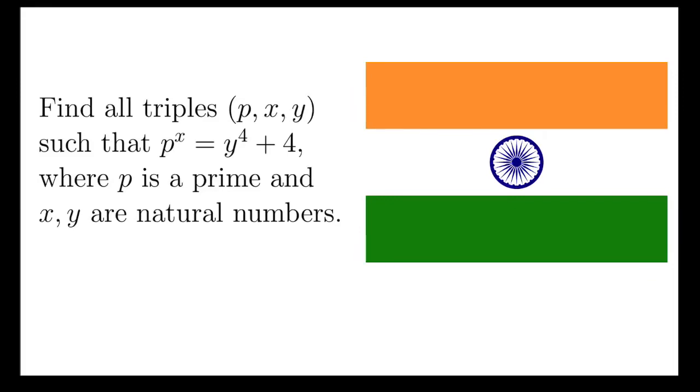Let's take a look at this problem, taken from the 2008 India National Mathematical Olympiad. It says, find all triples p, x, y such that p to the x equals y to the 4 plus 4, where p is a prime and x, y are natural numbers.